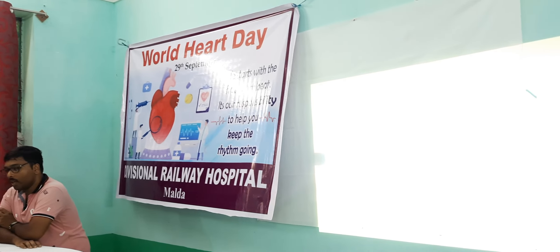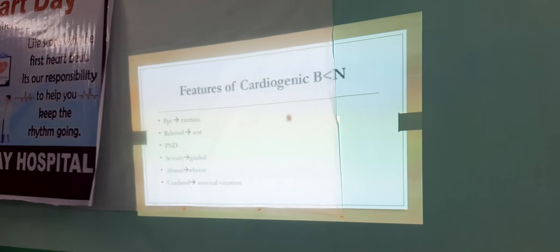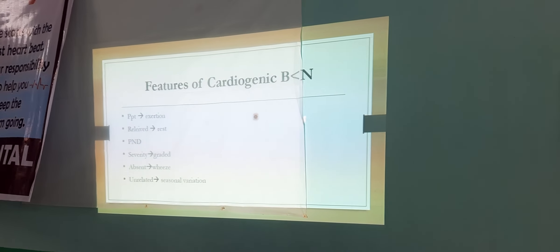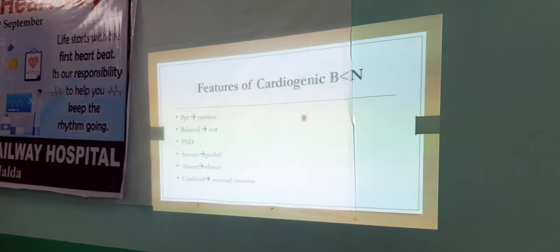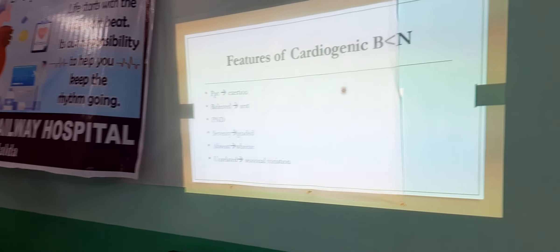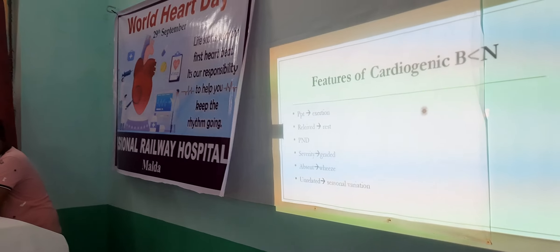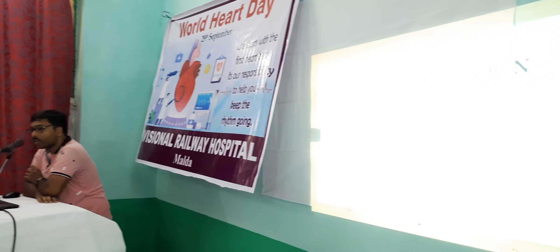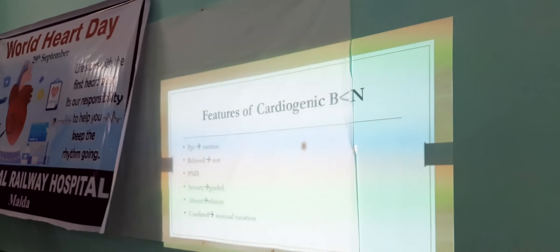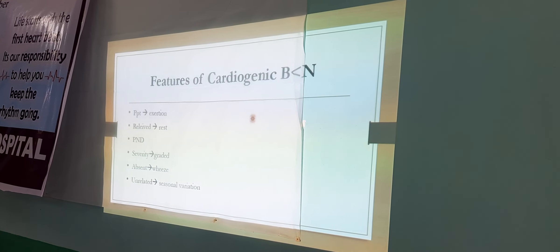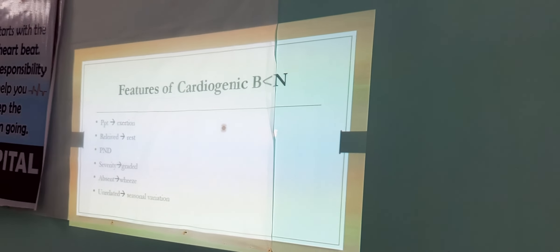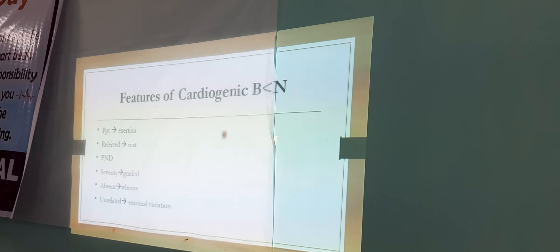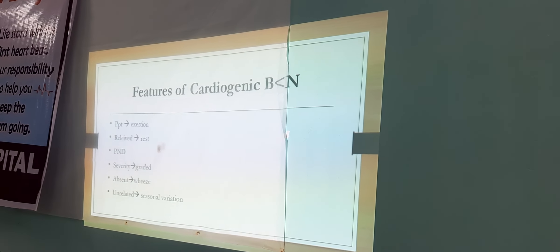The first point: cardiogenic breathlessness is precipitated by exertion and relieved by rest. The breathlessness is usually absent in normal activity; it is precipitated whenever the patient is having some physical activity like running, and is relieved promptly by rest. Next is PND — paroxysmal nocturnal dyspnea — one of the important hallmarks of cardiogenic breathlessness. The patient goes to bed unaware of respiratory distress, then suddenly wakes up in the midnight with respiratory distress. Once they wake up, gravitational support of the diaphragm helps alleviate the symptoms. It lasts for a few minutes only.